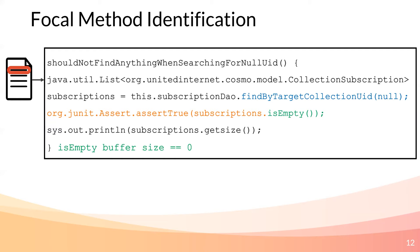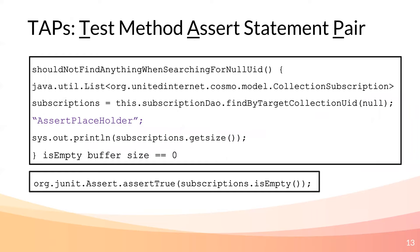Our last step is to remove the identified assert statement and replace it with a placeholder token. Therefore, we generate a TAP, or a test method assert statement pair, which will serve as our training data for the neural machine translation model. The data is comprised of the input to the model — the test method plus the focal method context — and the output of the model, consisting of the assert statement.